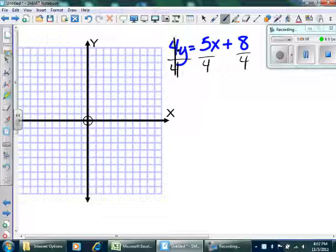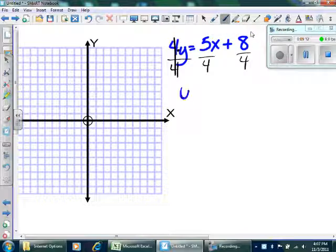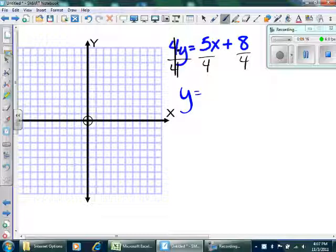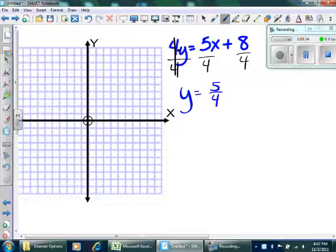The left-hand side, those will turn into just a plain old y. The 5 fourths, I will not make it 1 and 1 fourth or 1.25. I will leave it as 5 fourths. And if you know we've been doing slope, you're starting to see why.